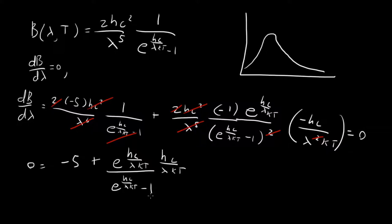One thing which will make our lives easier is we can notice that these combinations of variables only show up in the same way. It's only hc over lambda kt. So let's just call u equal to hc over lambda kt. And so this whole thing can then become minus five plus e to the u over e to the u minus one times u.